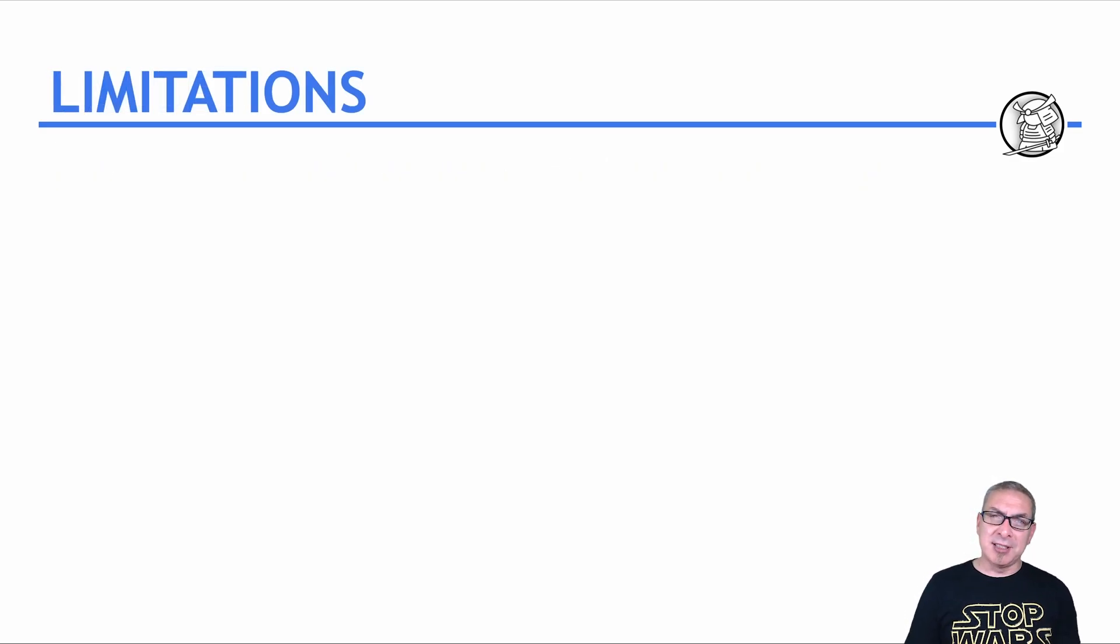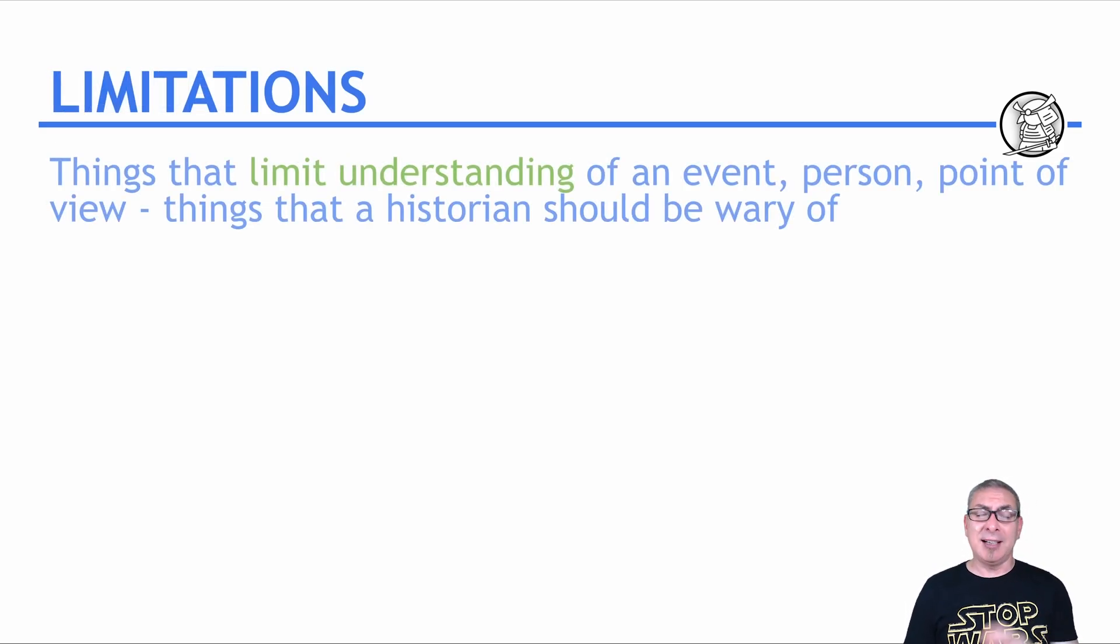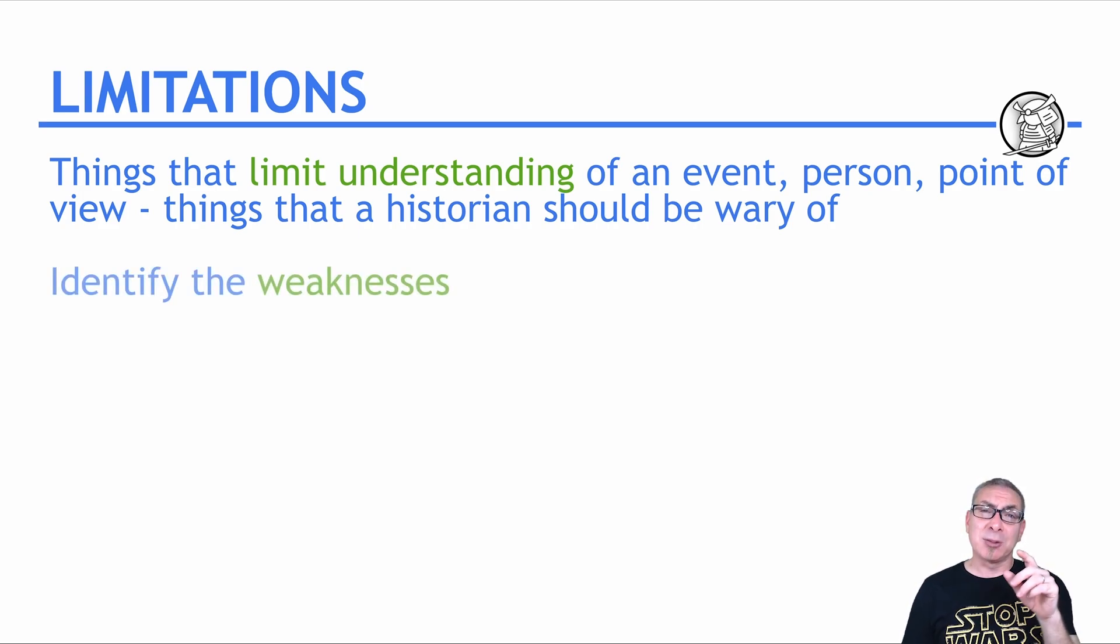The limitations. The fun keeps going. The limitations are things that limit the historian's understanding of an event, or a person, or a perspective, or maybe an interpretation. They are things that the historian should be wary of, maybe even suspicious of. So what you have to do is identify the weaknesses.